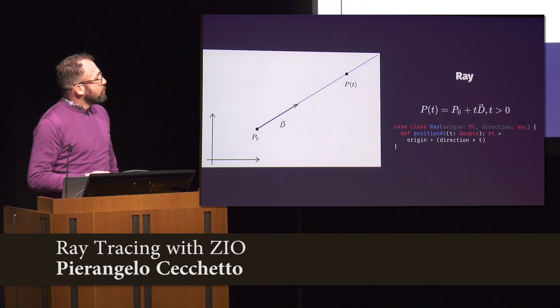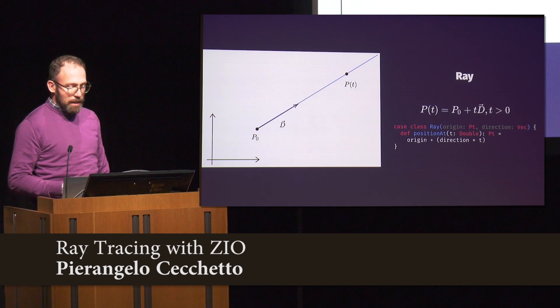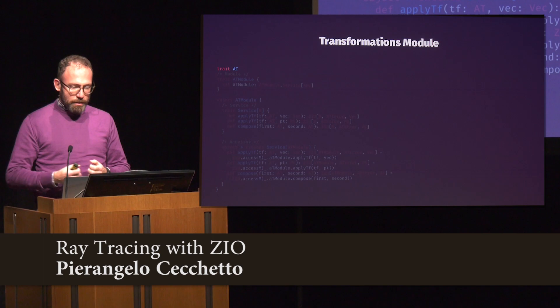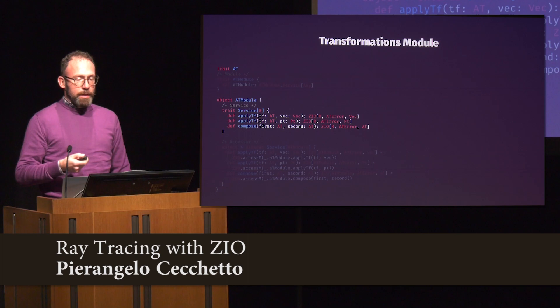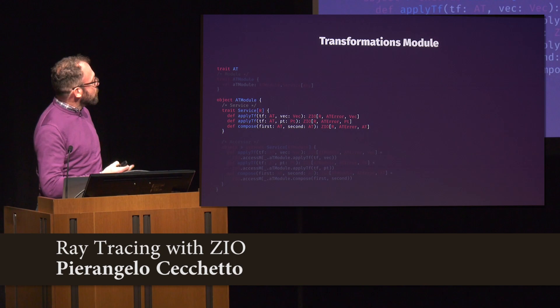The first thing we have to model is the concept of a ray. A ray is a set of points with an origin and a direction, and this is immediately modeled as a case class. We also need to be able to transform our rays and shapes, because we are in 3D space and need to rotate, translate, and scale our shapes. So we introduce our first module which deals with transformations.